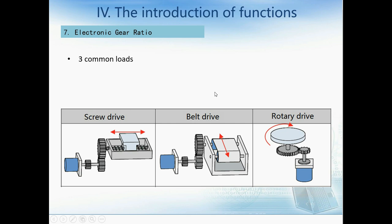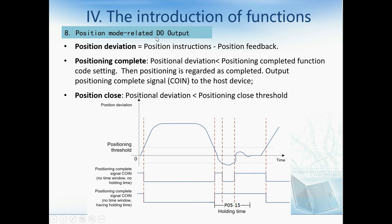Now we talk about position mode digital output. First, the position output signal is the position deviation, which equals position instruction minus position feedback. Second, the digital output signal is position complete — when the position deviation is less than the positioning completed function code setting value, it will output a positioning completed signal to the host device. The third is position proximity closed — when the position deviation is less than the positioning closed threshold, it will output a position closed signal.